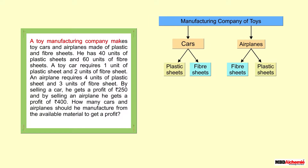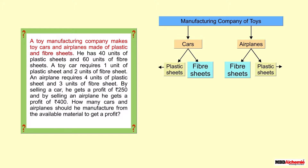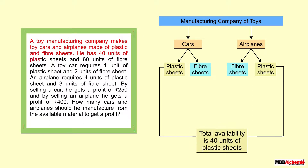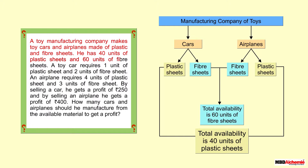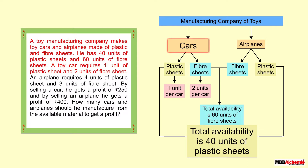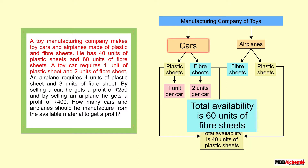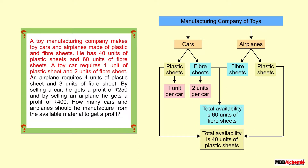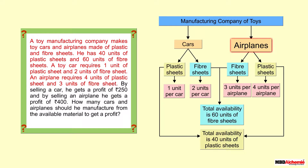The question is: a toy manufacturer makes toy cars and airplanes made of plastic sheets and fiber sheets. He has 40 units of plastic sheets and 60 units of fiber sheets. He wants to make a toy car which requires one unit of plastic sheet and two units of fiber sheets. Similarly, he wants to make an airplane which requires four units of plastic sheets and three units of fiber sheet.